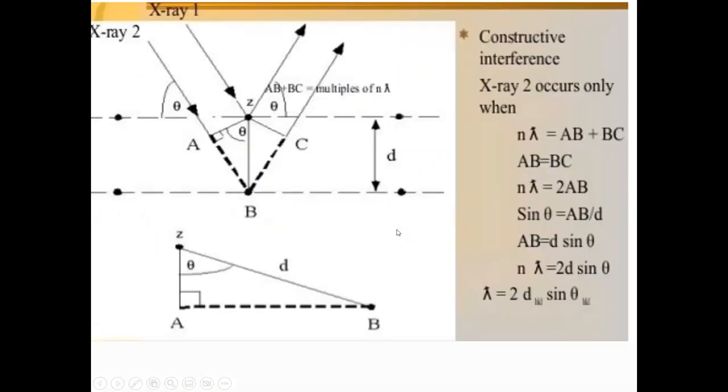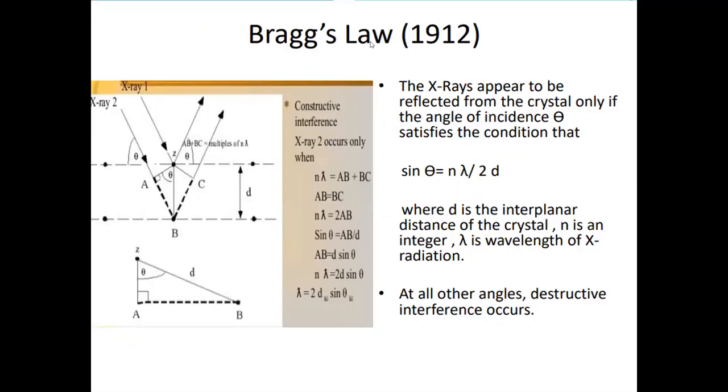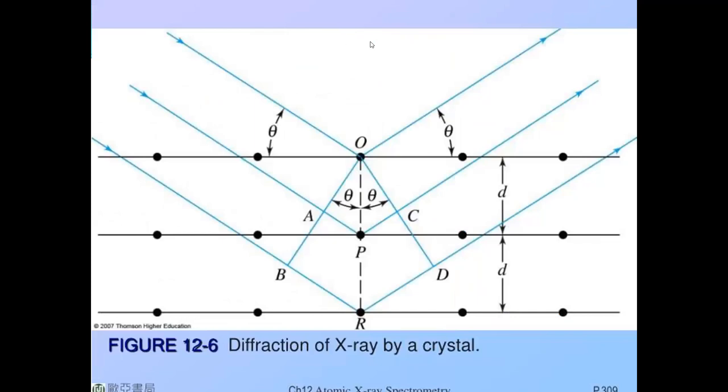So now you see again, that you can see here, that this angle is sin theta. This angle is the angle, and this is the distance, and this is the incident, and this one is the reflected. So the condition which will satisfy: sin theta equals n lambda over 2d.